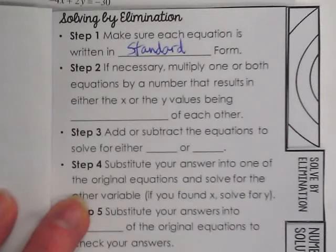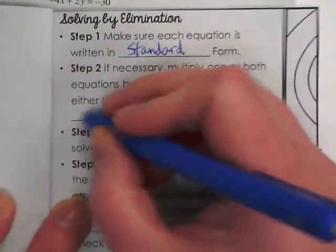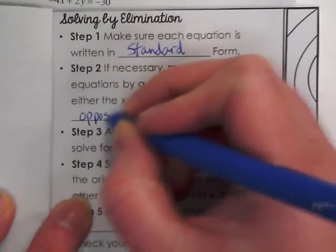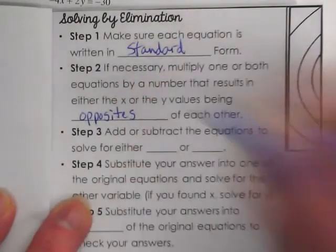Step two. Step two is an if necessary, and sometimes you don't need to do this step. If necessary, multiply one or both equations by a number that results in either the x or y value being opposites of each other.